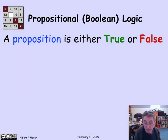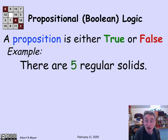To a mathematician, and in particular in this class, we're going to use the word proposition to refer to something that is either true or false. An example would be there are five regular solids. This happens to be true.